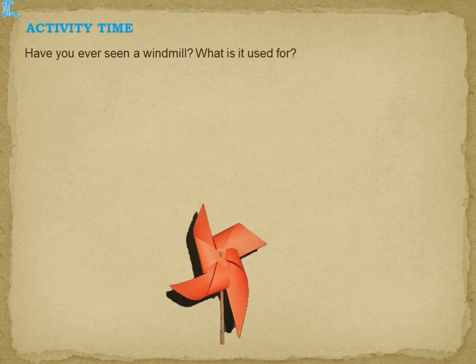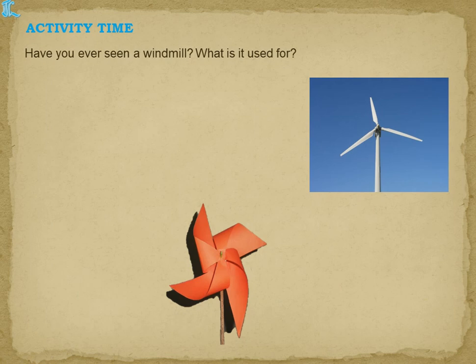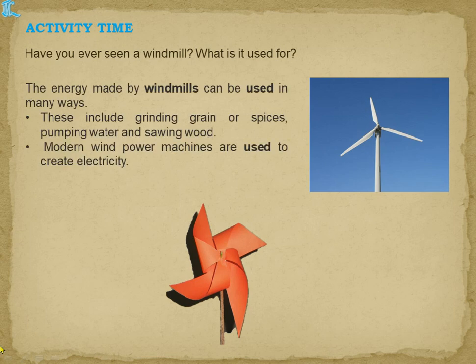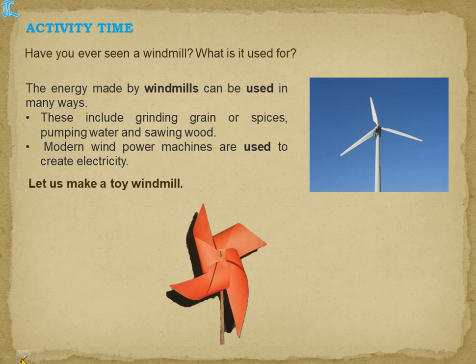Activity 10: Have you ever seen a windmill? Windmills are used in many ways — grinding grains or spices, pumping water, and sawing wood, because the energy from air causes the blades to rotate and generates energy. Modern wind power machines are also used to create electricity.